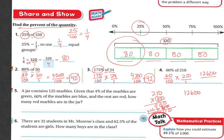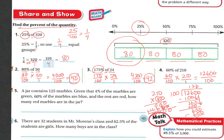So we have 12,600 over 100 times 1, which is 100. Dividing: 100 can't go into 1 or 12, but goes into 126 one time. Subtract to get 26, bring down the 0. 100 goes into 260 two times. Bring down the last 0. 100 goes into 600 six times with nothing left over. So the answer is 126.